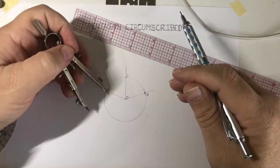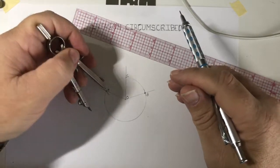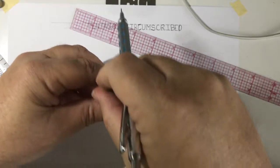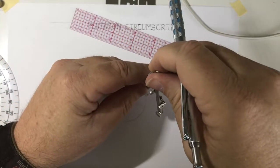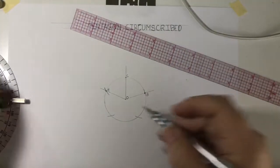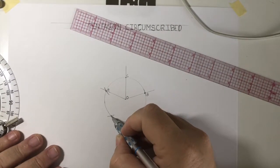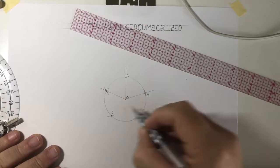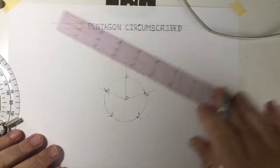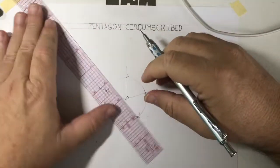Now using that same distance, that same BC distance as a chord, I am going to basically create my intersecting arc here or radius there, and my intersecting radius here. This creates point D, this creates point E.